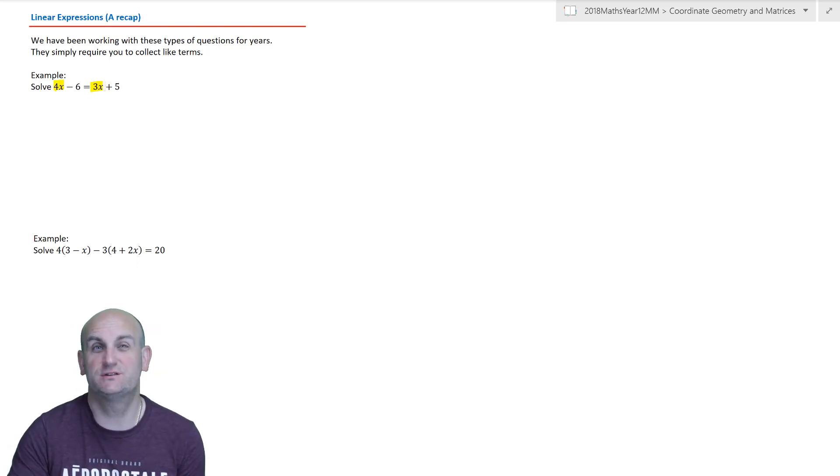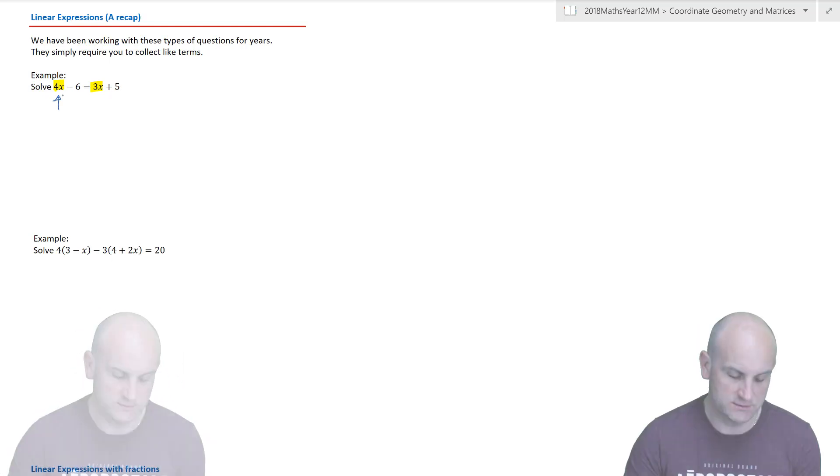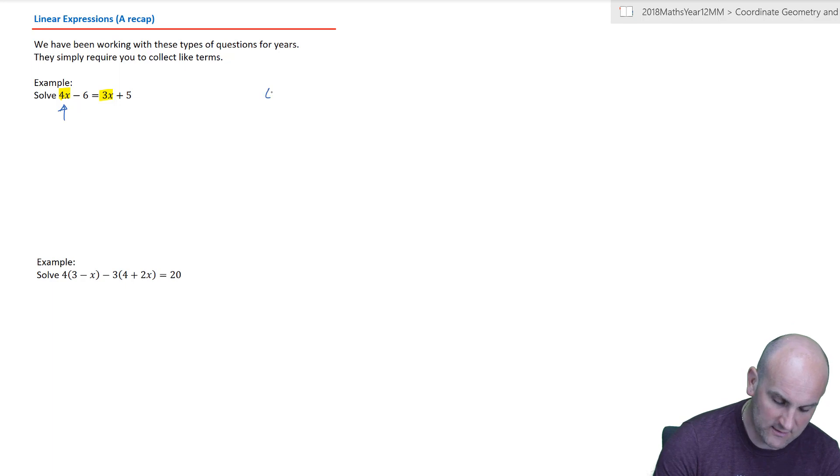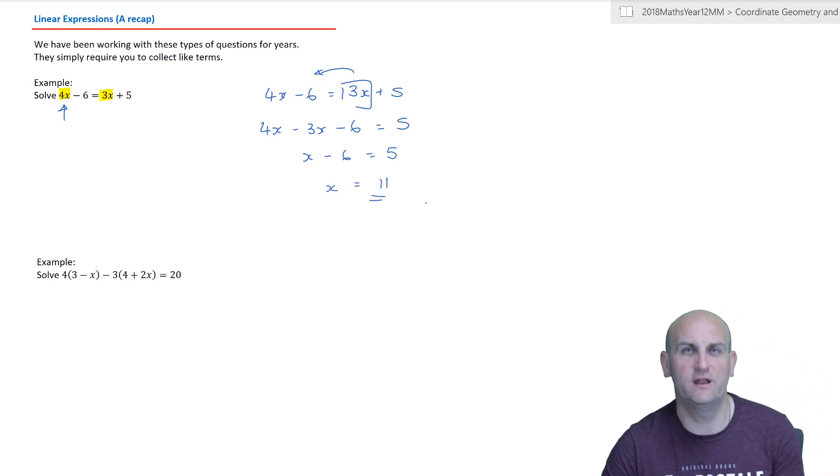We have to choose the side which has the greatest number of pronumerals, and in that situation that would be 4x. So I'm going to write my question out: 4x minus 6 is equal to 3x plus 5. Well the first thing I'm going to do is move my 3x over to my other side there. So I'm going to get 4x minus 3x minus 6 is equal to positive 5. Collect like terms gives me x minus 6 is equal to 5, and then add 6 to both sides. X is 11. Life is good.